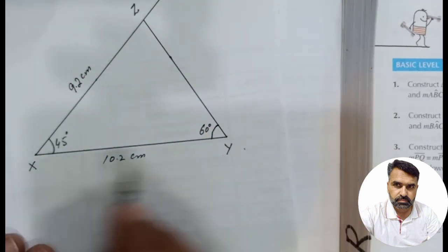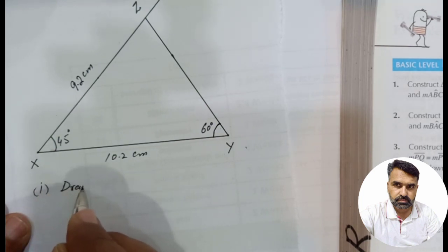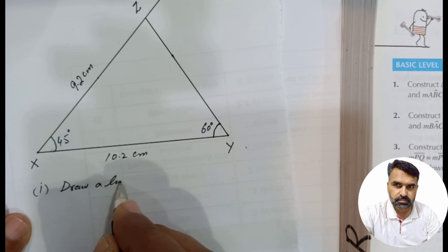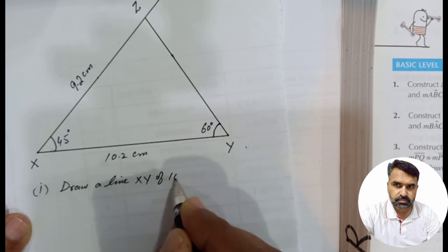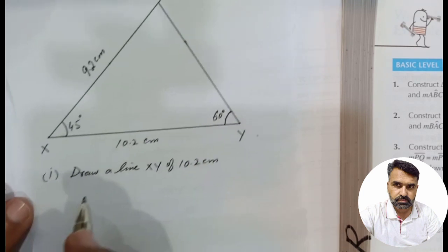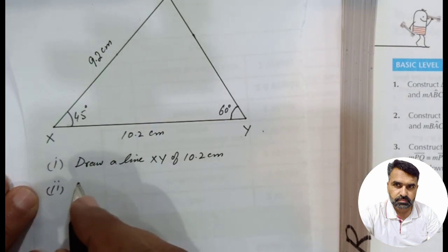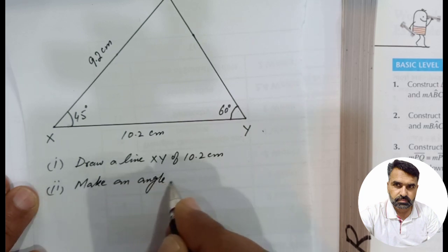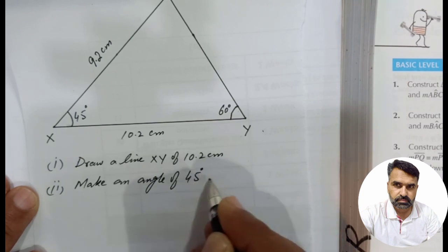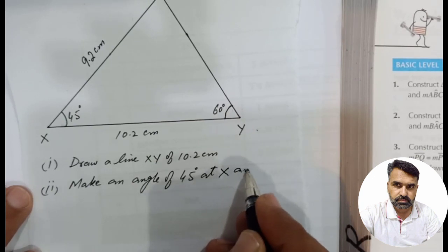The construction steps we have written are: Step 1 - draw a line XY of 10.2 cm. Step 2 - make an angle of 45 degrees at X and produce its arm.